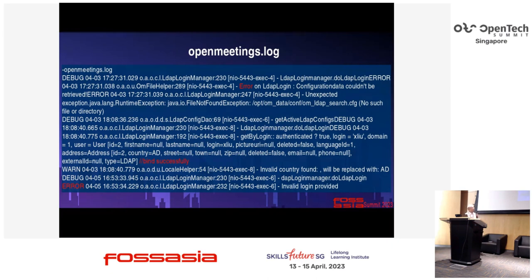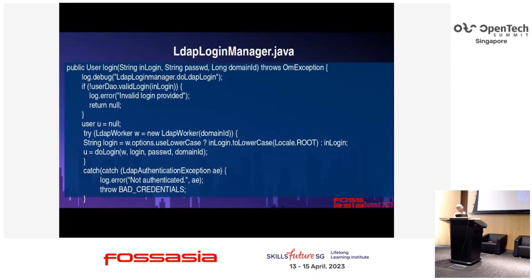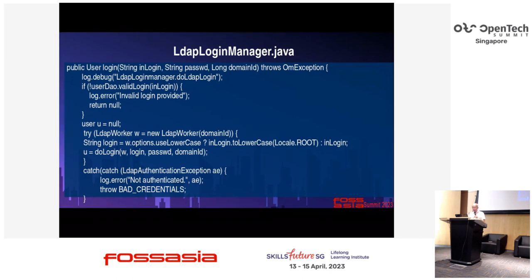Here comes some code. Every time when you click the login button, your system will call the login method, then call the method in the user DAO class — validLogin — to check if the user input is a valid login name. If not, the program will stop. If yes, keep going. Then it tries to call LDAP work to build a constructor which will initialize some values.